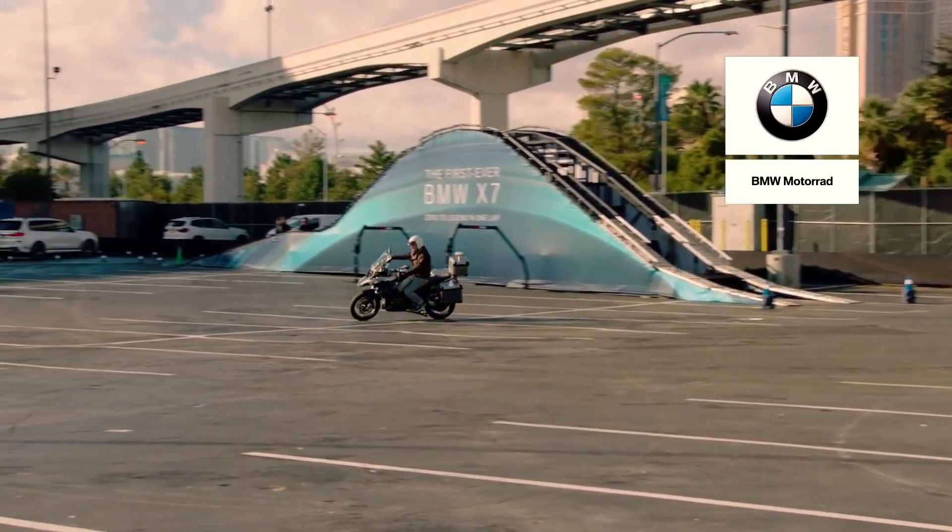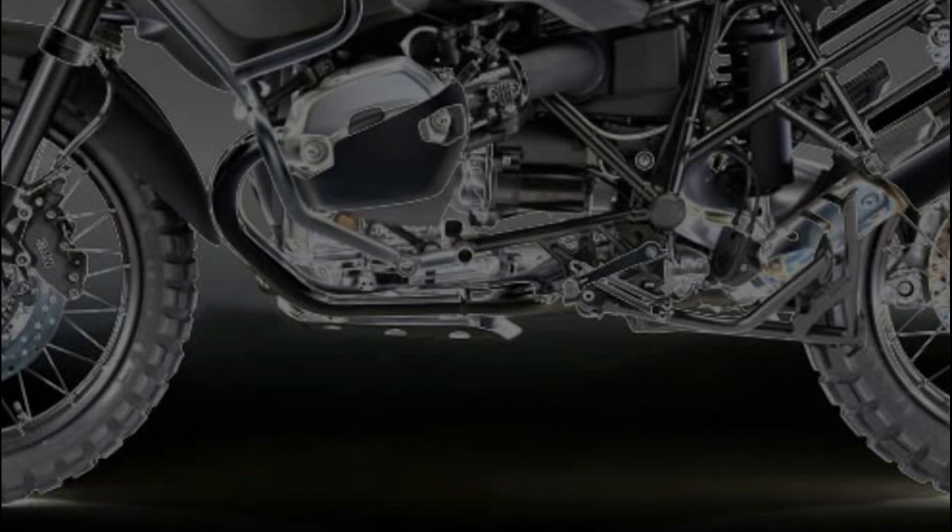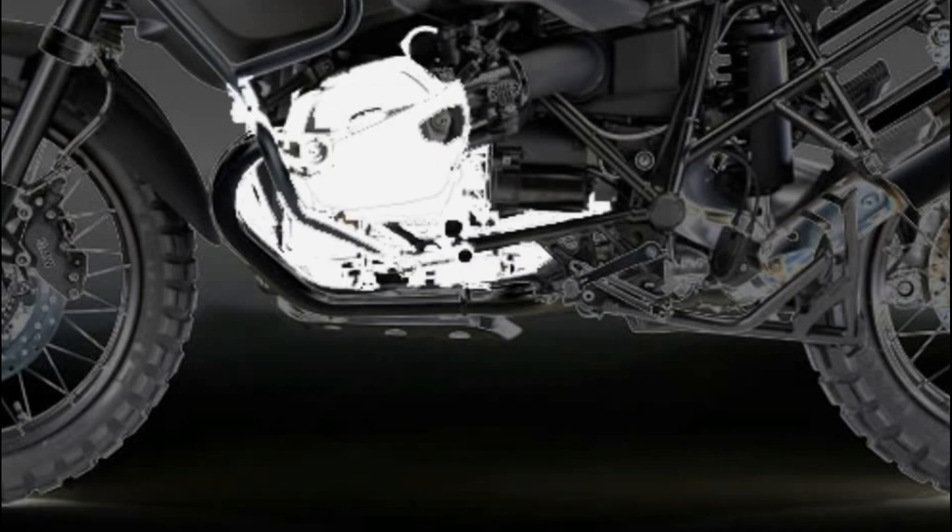Surely you have noticed the grills of some of the latest BMW cars that have come out of production. They're big, kidney-shaped, and hard to miss, but deep down they serve a very important function.